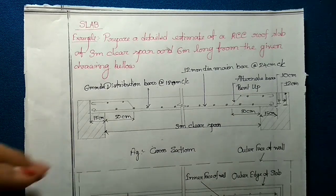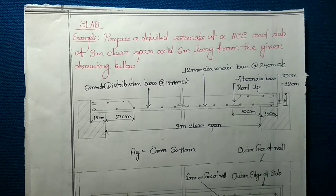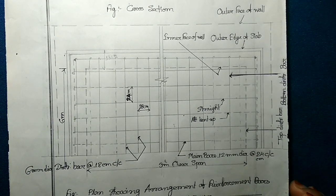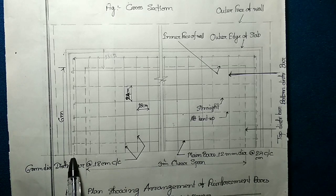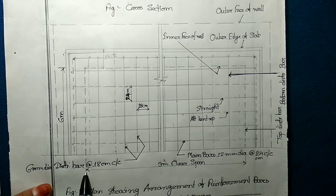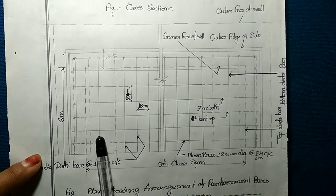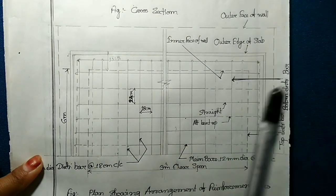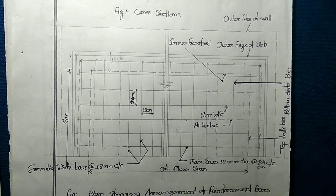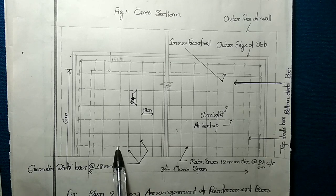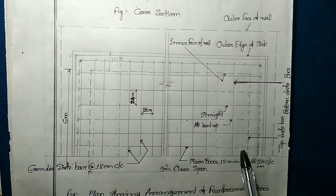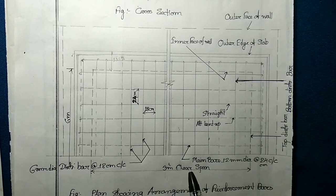In the other direction, the actual length will be 6.3 meters. In this figure you can see the actual reinforcement placement. The dotted lines show the top bars and the solid lines show the bottom bars. In the 3-meter direction we are going to place the main bars, and the distribution bars will be perpendicular. You can see the dotted portion, then solid portion, then dotted portion again.